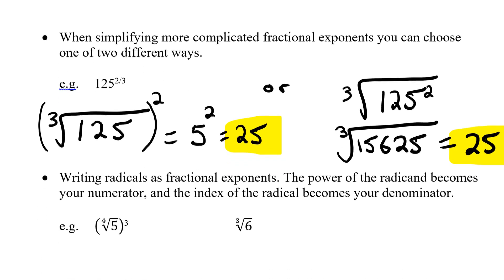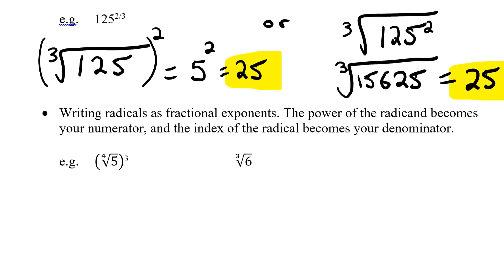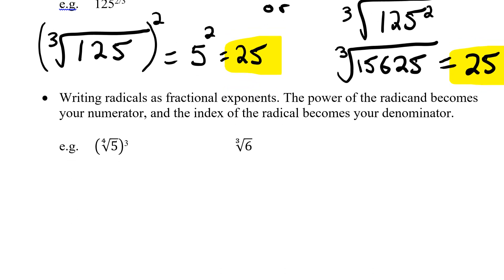Okay, what if we have these radicals that we want to write as a fractional exponent? Essentially we're going the opposite way. So the power of the radicand becomes the numerator and the index of the radical becomes my denominator.